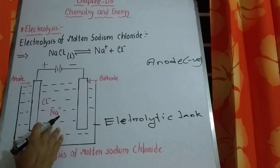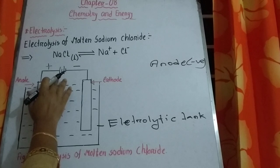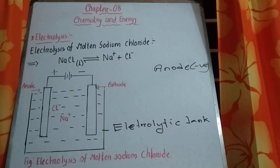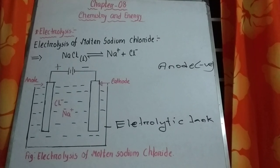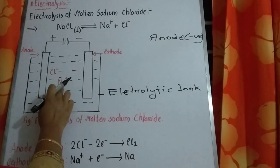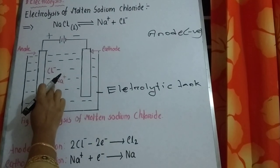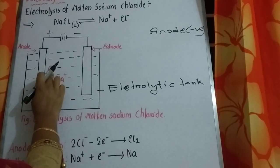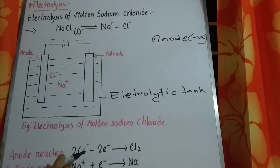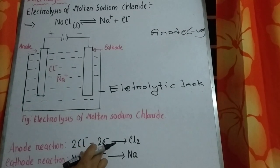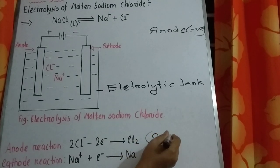Molten sodium chloride is used as electrolyte. Anode is attached with the positive end of the battery and cathode is attached with the negative end. Whenever electricity is passed, sodium is a cation and cations are attracted by the negative electrode — that is cathode. So sodium will be attracted by the cathode, and chloride ion will go towards the anode. After going to the anode, each chlorine atom will donate one electron — so two chlorine atoms donate two electrons and are converted into chlorine gas. This process is known as oxidation.